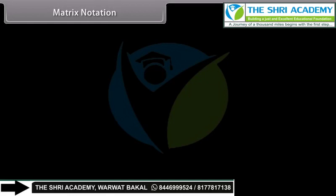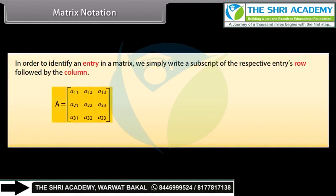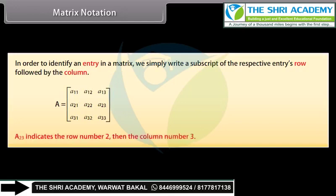Matrix notation. In order to identify an entry in a matrix, we simply write a subscript of the respective entry's row followed by the column. In matrix A, we write A₂₃ to denote the entry in the second row and the third column. A₂₃ indicates row number 2 and column number 3.